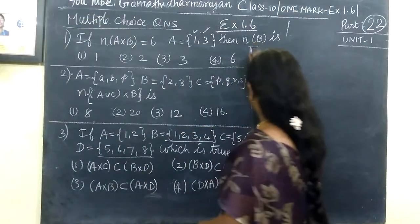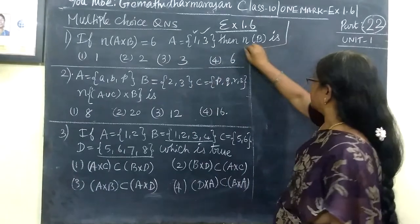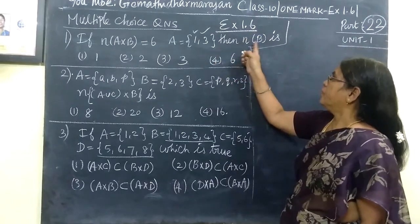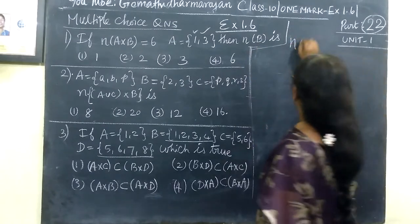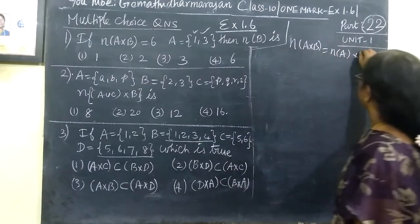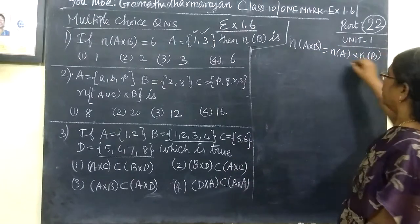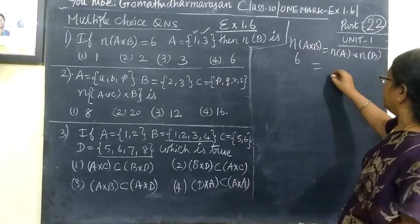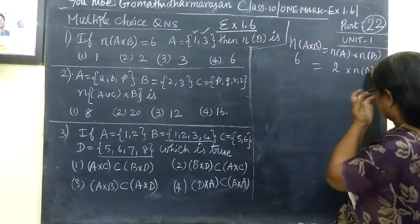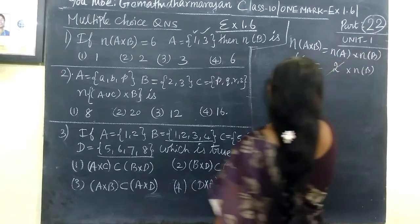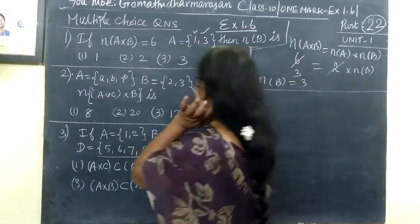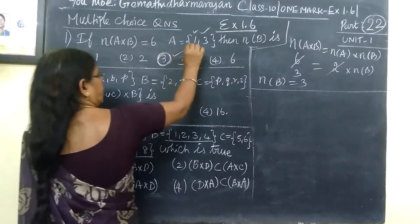So, if you now pass it into one more thing. Standard exercise 1: N(A∪B) is given, A is even. Find N(B). We know the formula N(A∪B). N(A∪B) is 6 and N(A) is 2. Then N(B) is 3. So which implies N(B) is equal to 3, and N(A) is equal to 3. Here option 3 is the correct one.